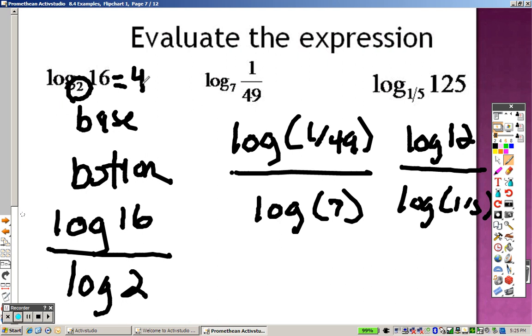Log of 1 divided by 49 and then all that divided by log of 7 gives you negative 2. And log of 125 divided by log of 1 divided by 5, you end up getting negative 3. That's your answer for that one.